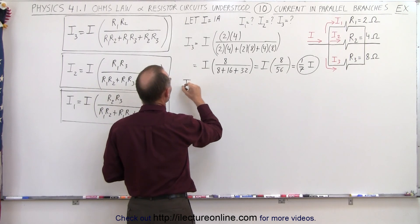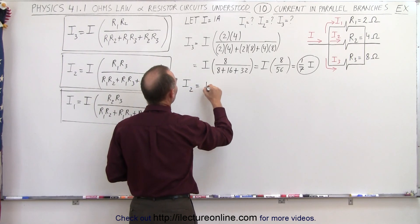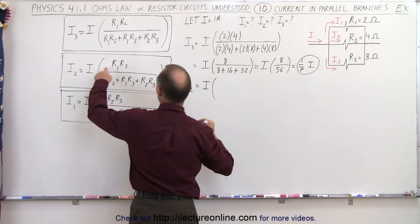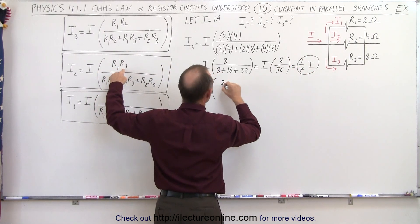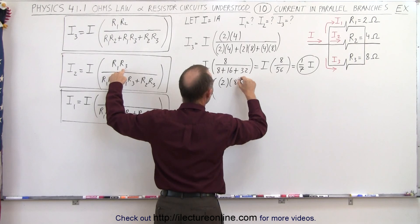So here we have I2, which is equal to I times R1 times R3, which would be 2 times 8.